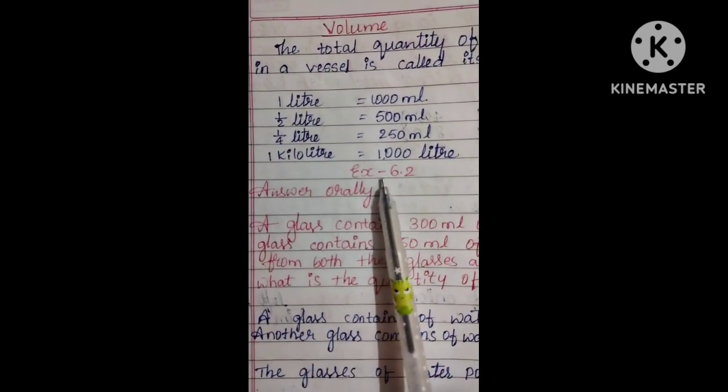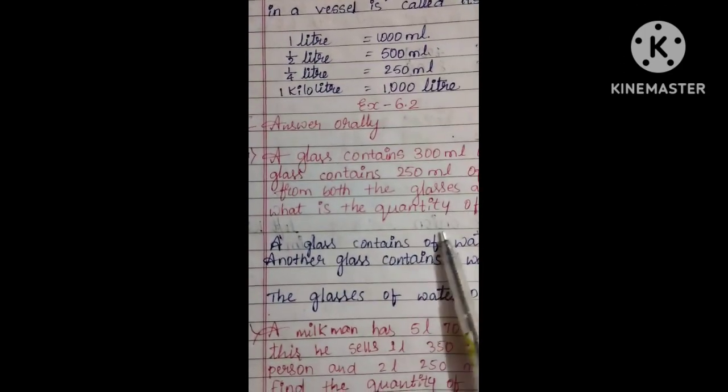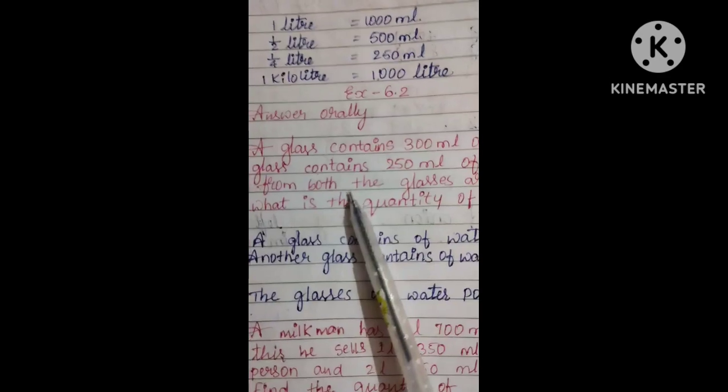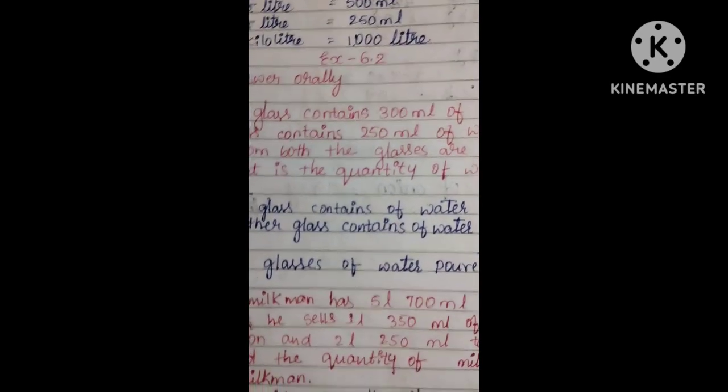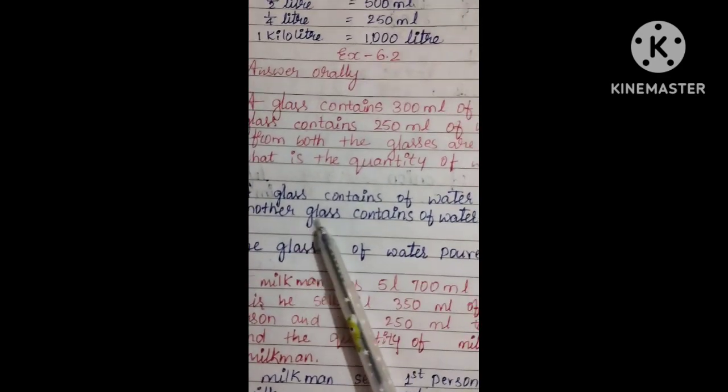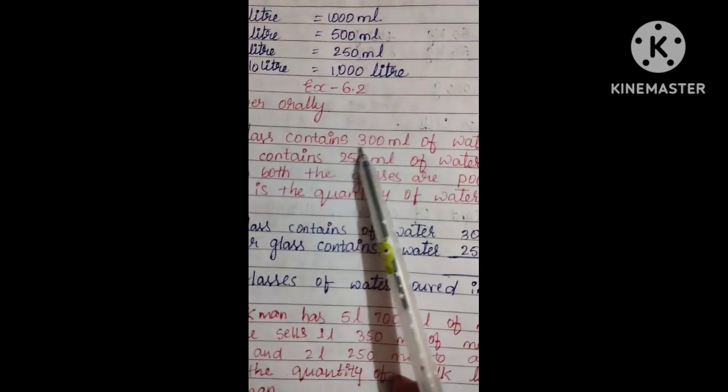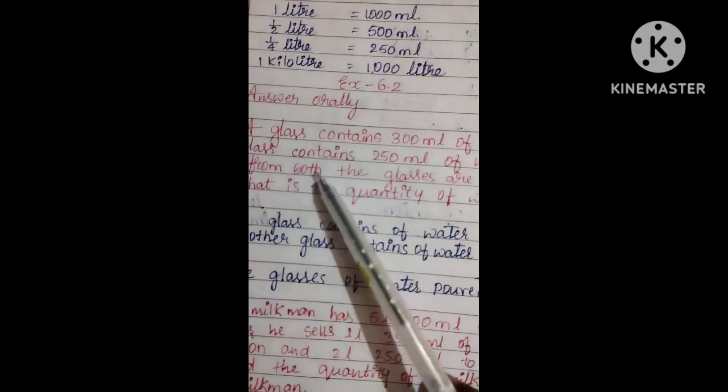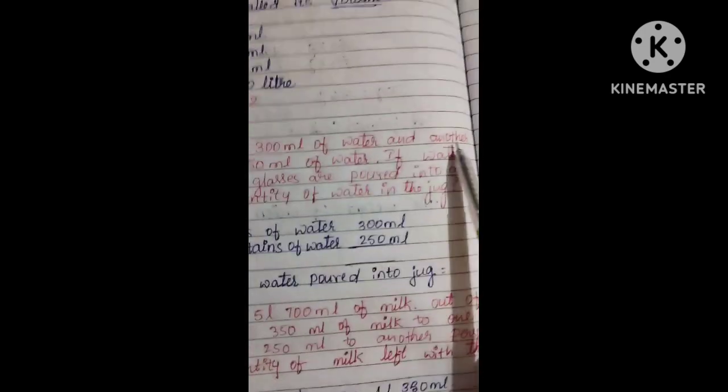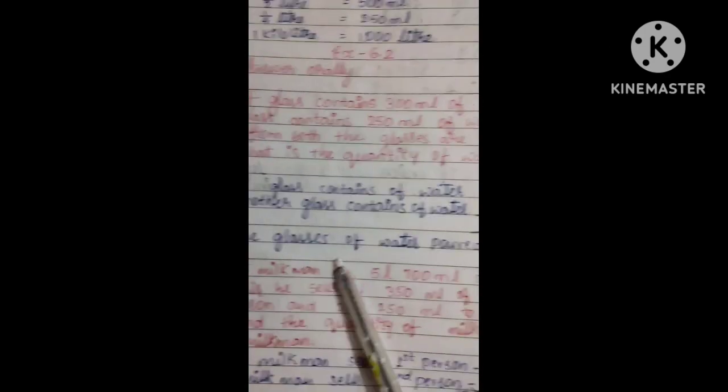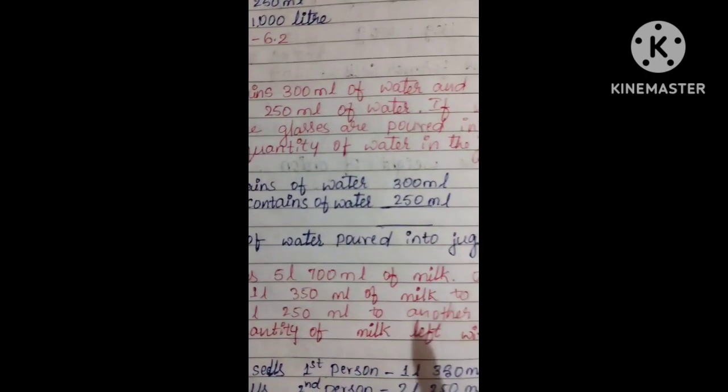We have exercise 6.2. Answer orally. Here's the question. A glass contains 300 ml of water. Another glass contains 250 ml of water.